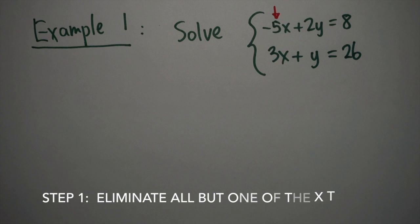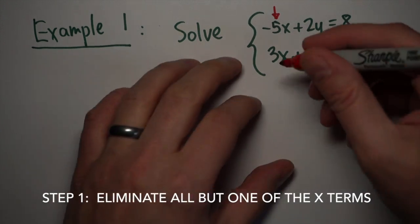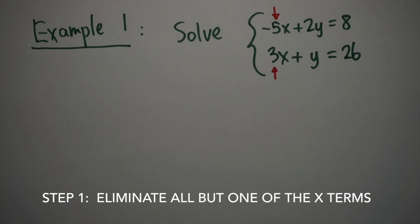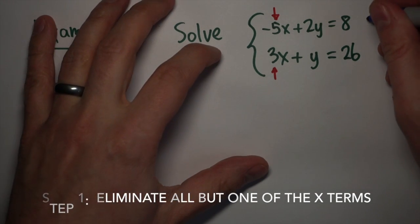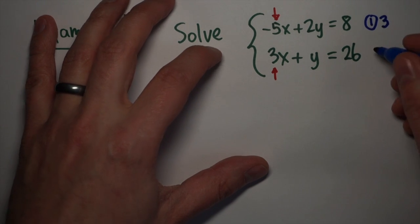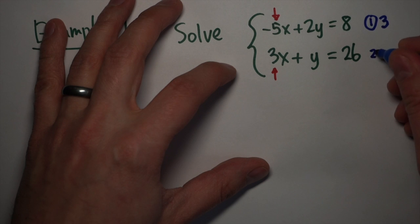The first step of Gauss-Jordan Elimination is to find some way to use the upper left, or this negative 5x, to get rid of the 3x below it. And there's not really an easy way of doing that right now, so what I'm going to do is multiply both my equations so that their coefficients match up. When I do this, I can multiply the first equation by 3, row 1 by 3, and the second equation by 5, row 2 by 5.